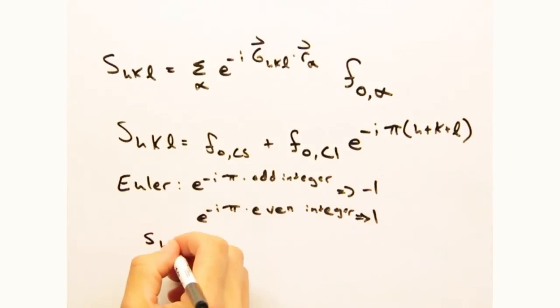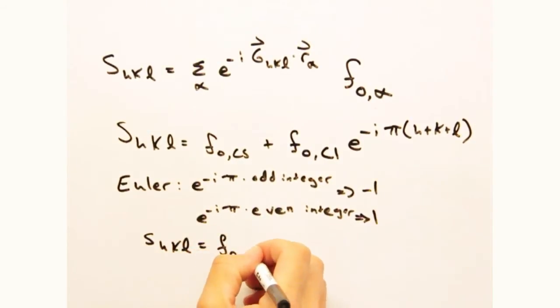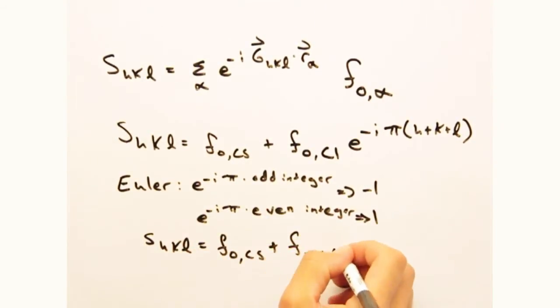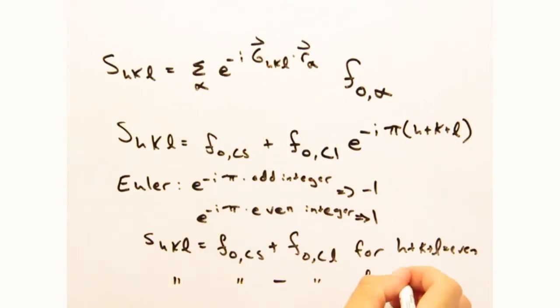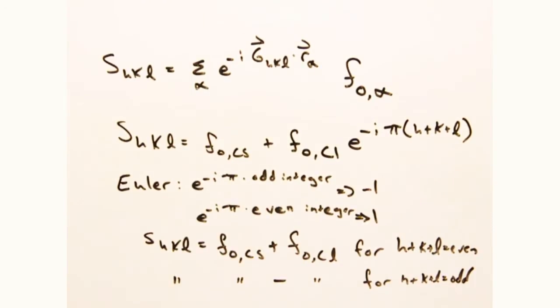Let's put it all together. Okay, we're going to get a structure factor that goes as f0 cesium plus f0 chlorine for h plus k plus l equals an even integer, and f0 cesium minus f0 chlorine for h plus k plus l equals an odd integer.